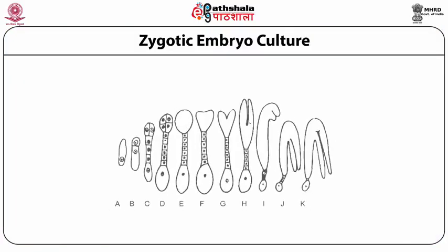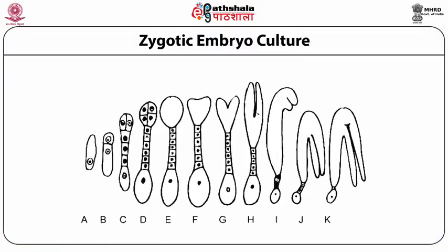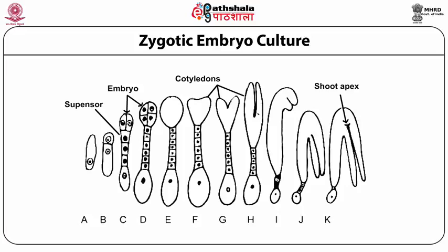You will see in this diagram the stages of embryo development in Capsella bursa-pastoris, starting from a single cell zygote and developing up to a fully developed dicotyledonous embryo.